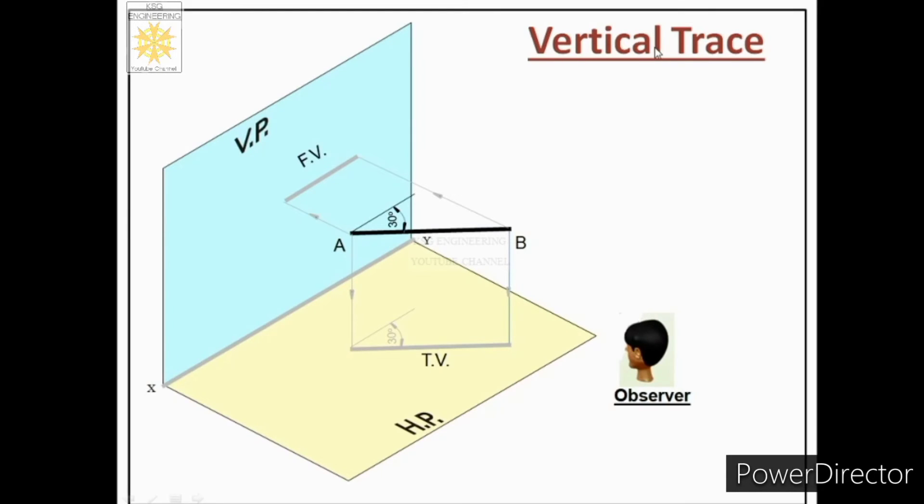Now let us understand vertical trace. Over here you can see that line is shown parallel to HP and it is inclined to VP. When we will extend this line, it will intersect somewhere on the vertical plane.